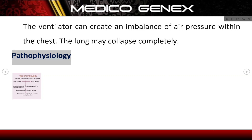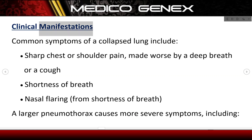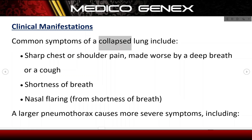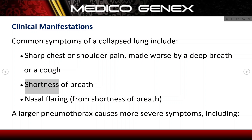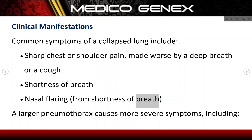Pathophysiology. Clinical manifestations. Common symptoms of a collapsed lung include: sharp chest or shoulder pain, made worse by a deep breath or a cough; shortness of breath; and nasal flaring from shortness of breath.